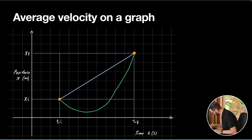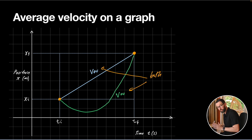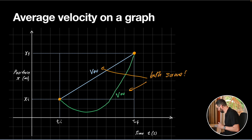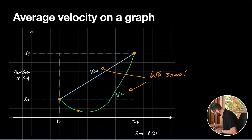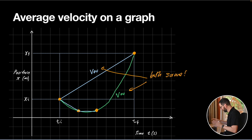As far as average velocity goes, these two motions are both going to be the same, because average velocity only depends on the start and finish point of our motion. So if we want to dive deeper into these two motions we're going to have to look at something more precise. One thing we could do is split our motion up into multiple pieces and look at the average velocity over each smaller interval based on the slope of each segment. And in fact that's the idea behind how we're going to define instantaneous velocity in the next video.